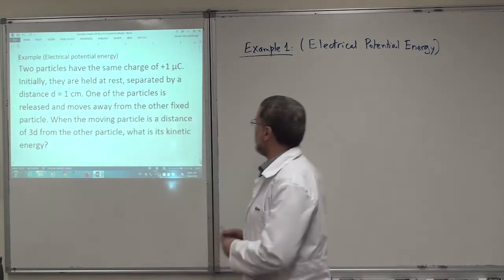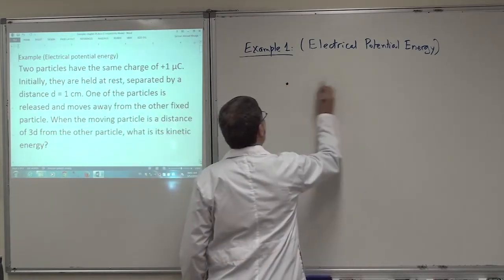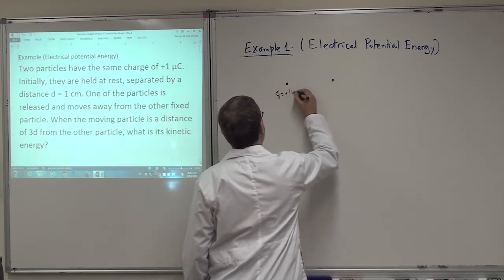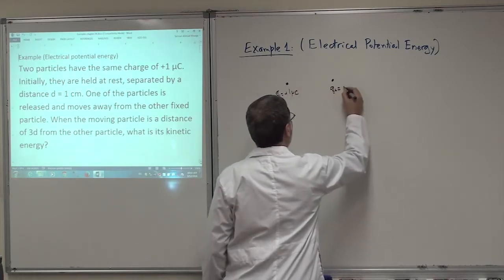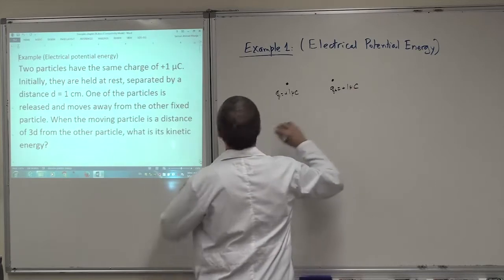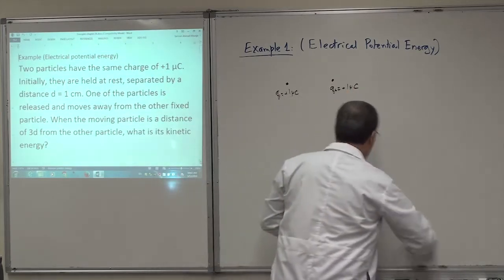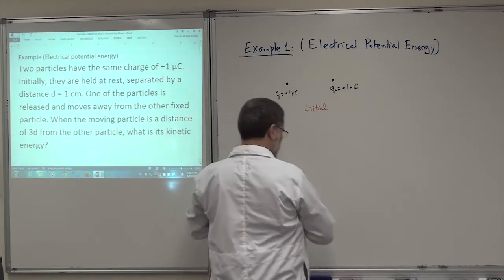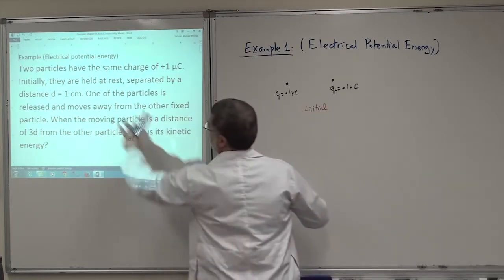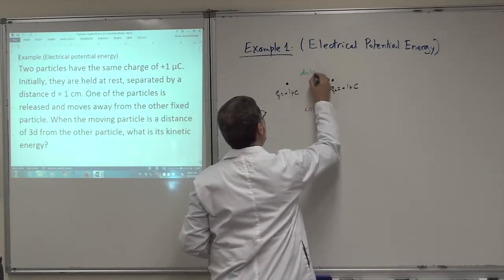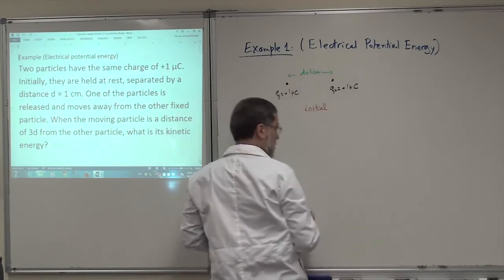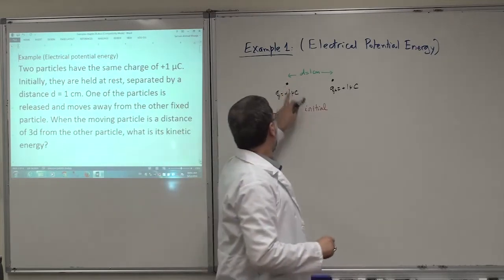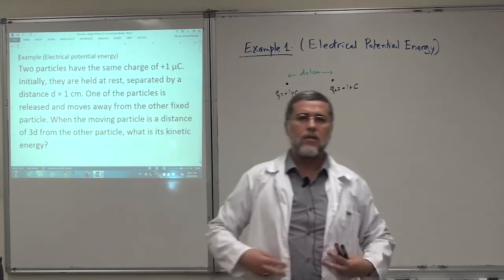Initially, they are held at rest. This is Q1 equal plus one micro Coulomb, and Q2 equal plus one micro Coulomb. They are held here fixed — this is the initial configuration — and they are separated by a distance D equal one centimeter.